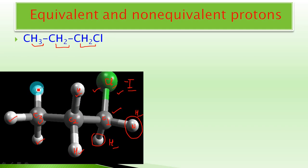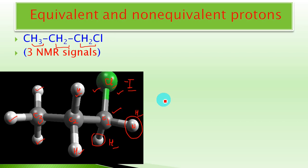In short, the 7 hydrogen nuclei in 1-chloropropane exist in three different electronic environments, forming three sets of protons with distinct surroundings.